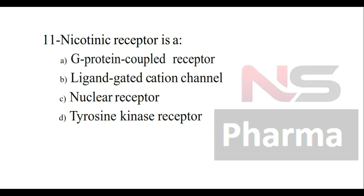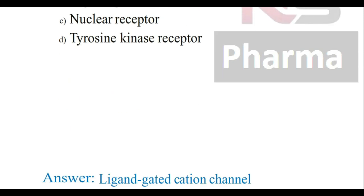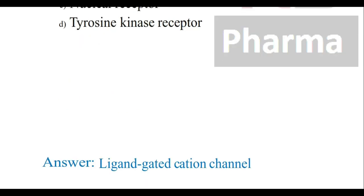Question number eleven: The nicotinic receptor is — Option A: A G-protein coupled receptor, Option B: A ligand-gated cation channel, Option C: A nuclear receptor, Option D: A tyrosine kinase receptor. The answer is ligand-gated cation channel.